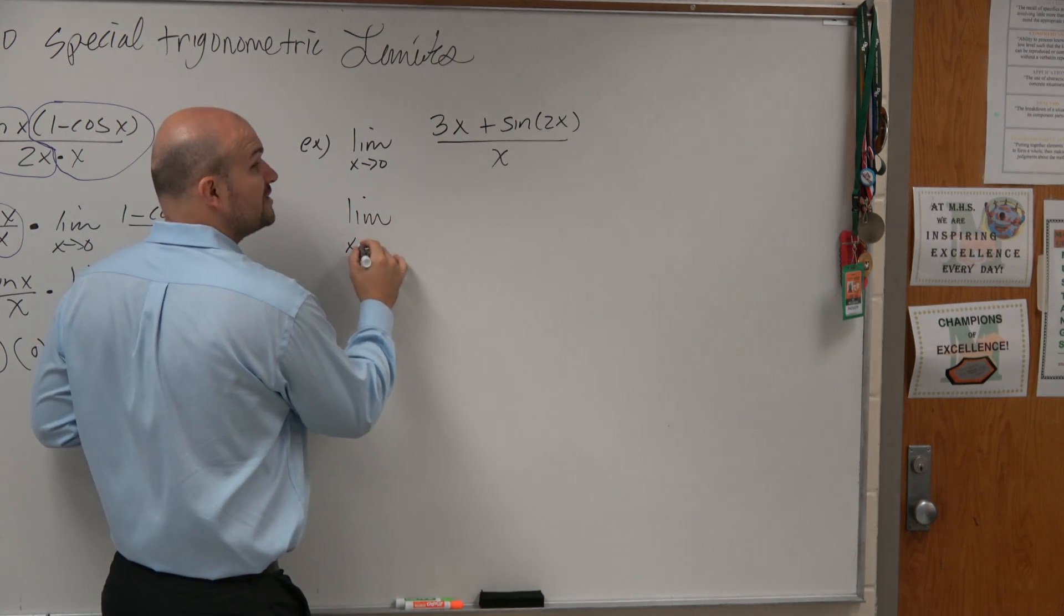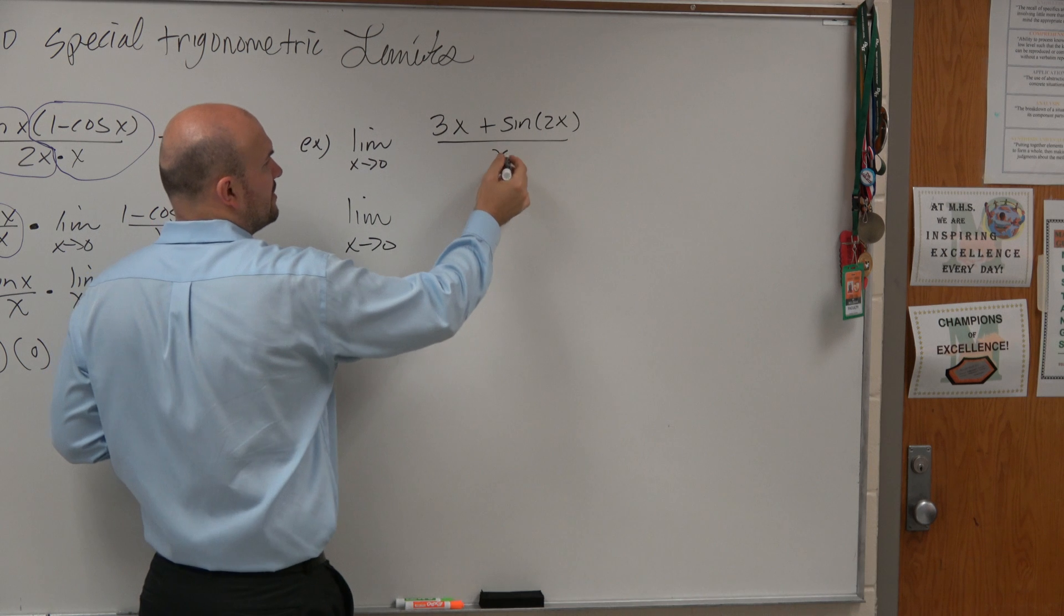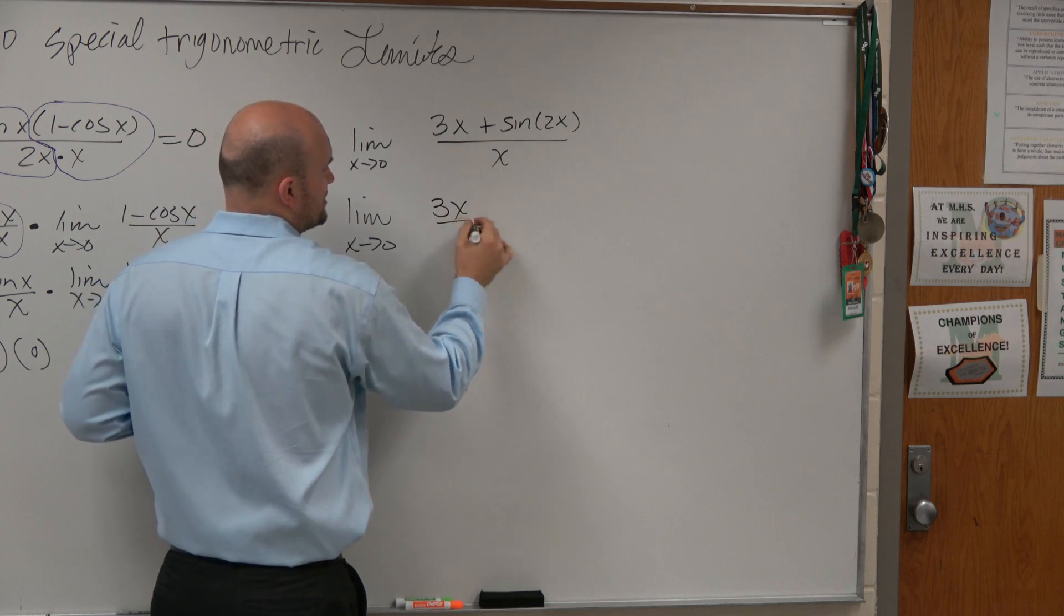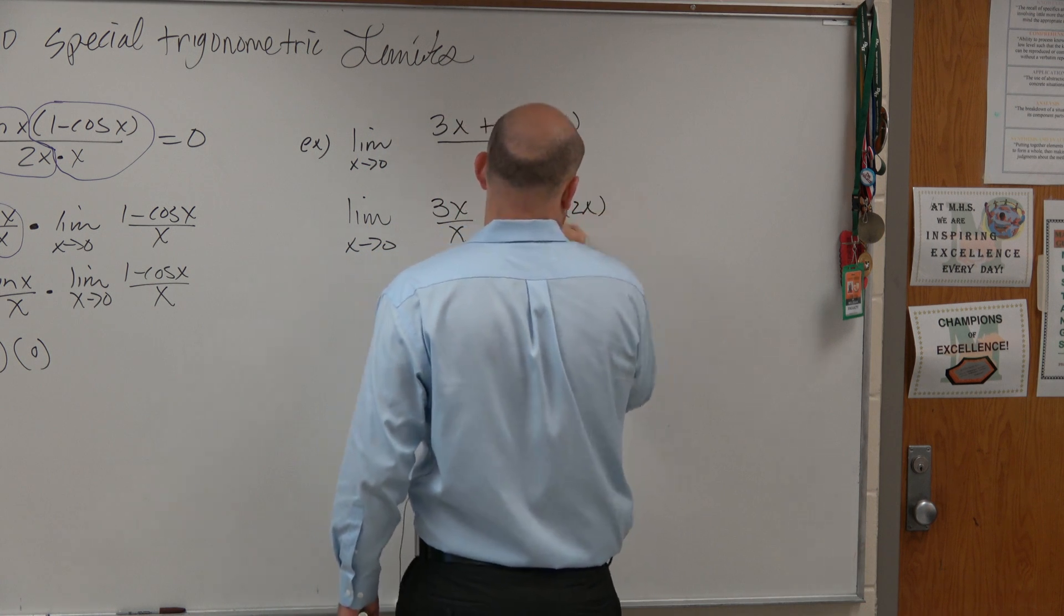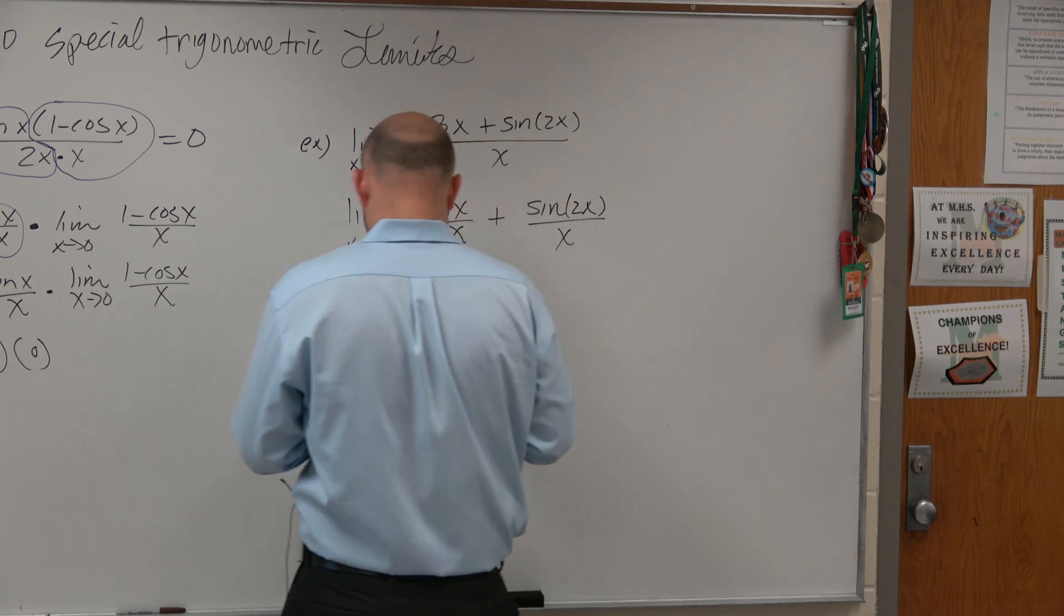Again, notice how I'm rewriting the limit. So what I'm going to do is I'm going to say this is 3x over x, plus sine of 2x over x.